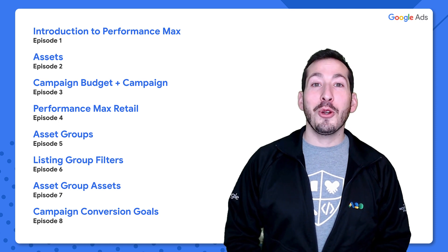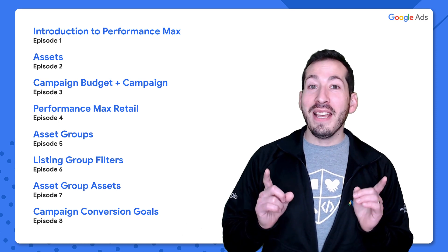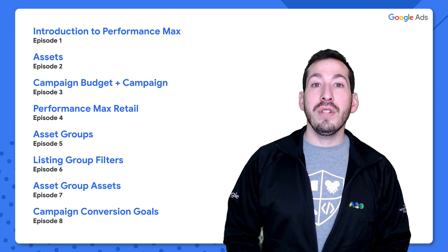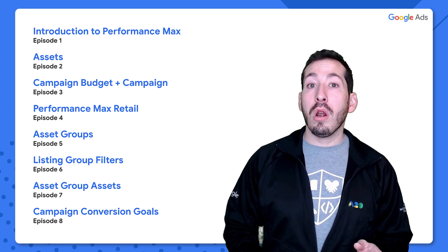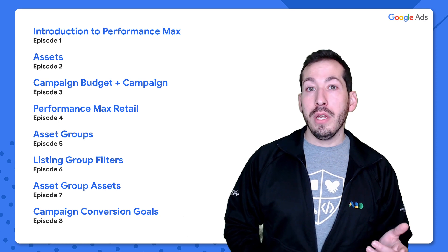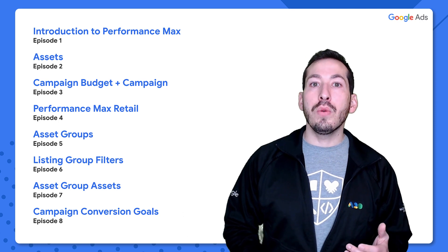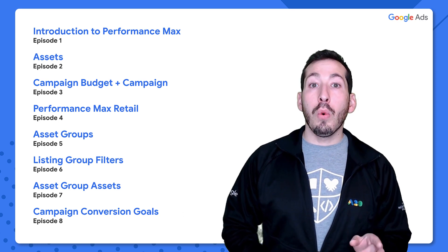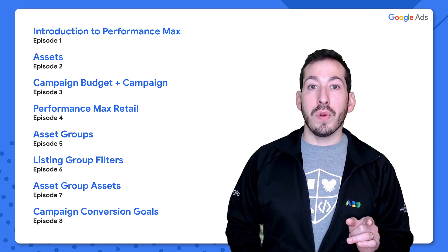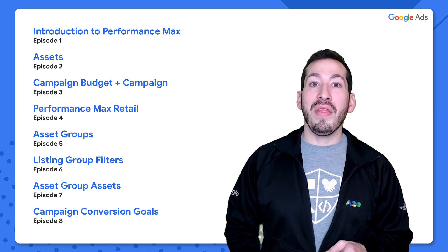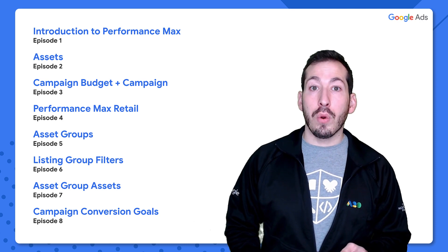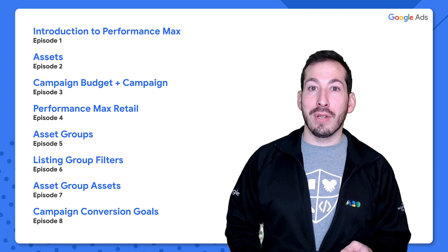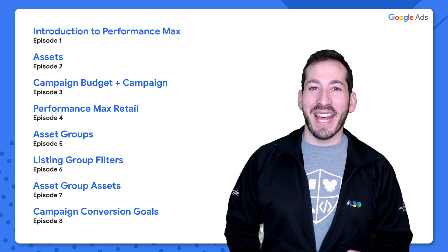As mentioned earlier, there is one other requirement: setting up one or more product partition trees using listing group filters. We'll get to that in episode six. In the next episode, we'll talk about asset groups. I'll see you then.